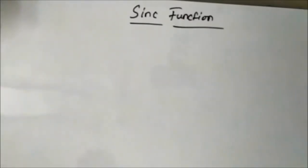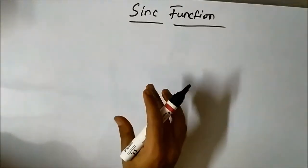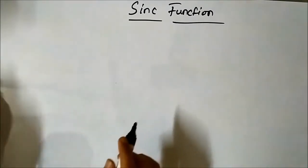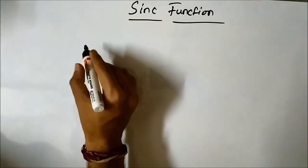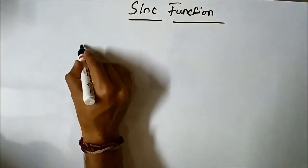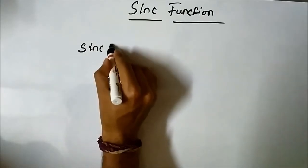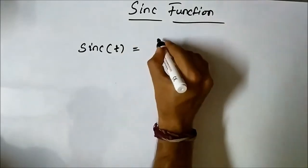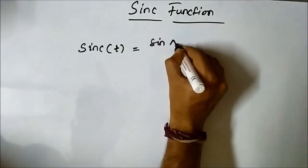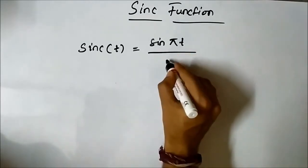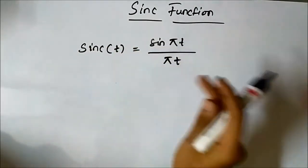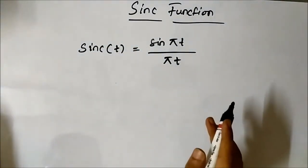Hello, friends. In this video, we are going to discuss another basic elementary signal function which is the sinc function. The sinc function is represented as sinc(t) = sin(πt) / (πt). This is the mathematical representation of the sinc function.